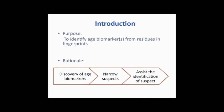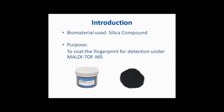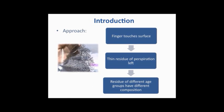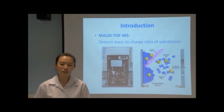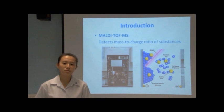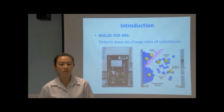The discovery of these biomarkers will help in the narrowing identification of suspects. Fingerprints collected were dusted with a silica carbon composite before analysis with the MALDI-TOF-MS. The residues' compositions differ across different age groups. The MALDI-TOF-MS allows for the detection of the mass-to-charge ratio of substances.